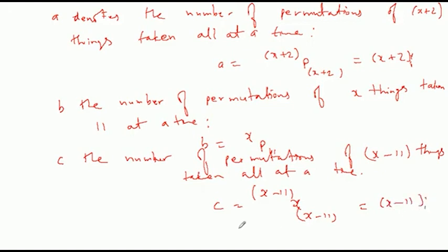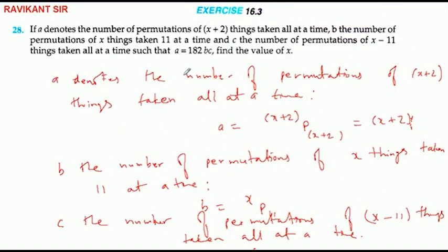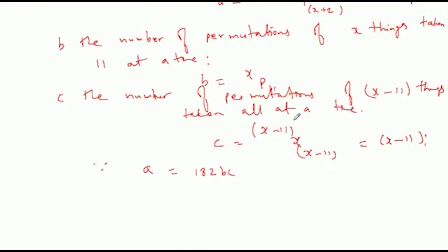आप देखिए, ऊपर जो हमारे पास दिया हुआ है: A किसके equal है और 182 B C के equal है। ठीक है। हमें निकालना है X का value। चलिए देखते हैं, BC का value रखते हैं।